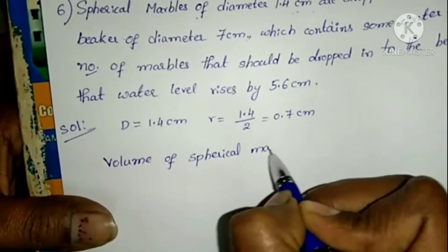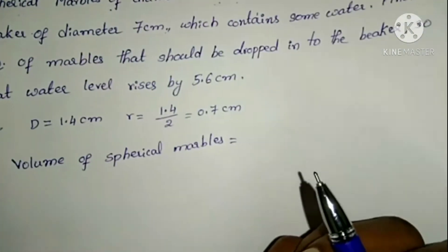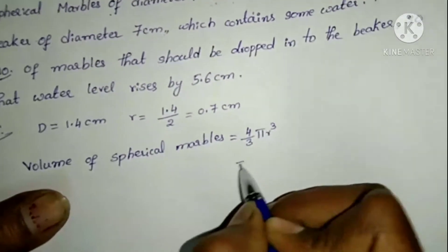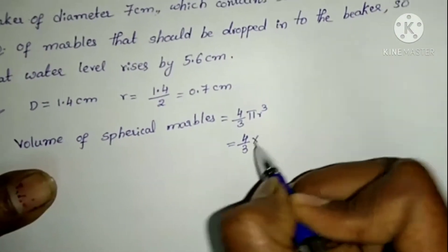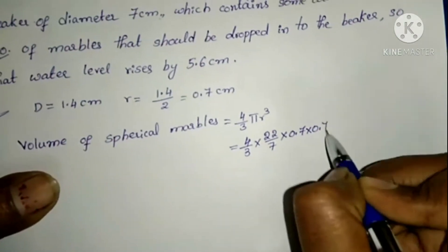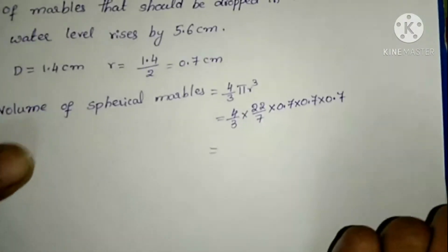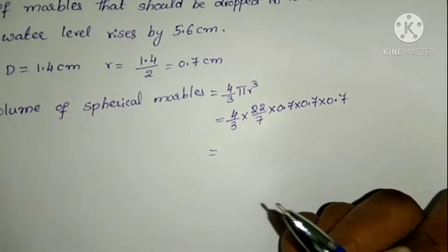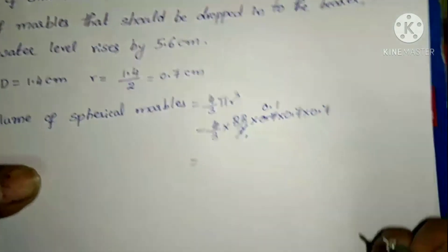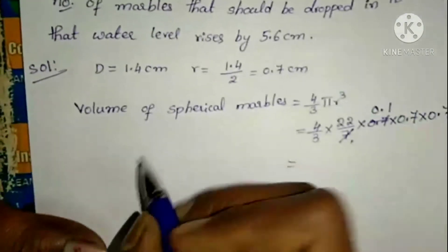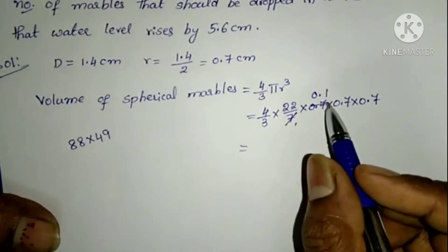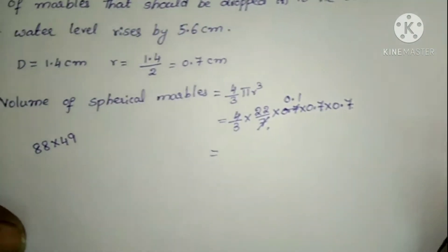Volume of a sphere formula is 4/3 π r³. Substituting: 4/3 × 22/7 × 0.7 × 0.7 × 0.7. After cancellations, multiply: 22 × 4 = 88, and 0.7³ with 7 cancelling gives numerator 88 × 0.49, divided by 3. Computing: 88 × 4 = 352, carrying forward.